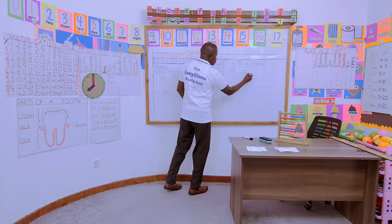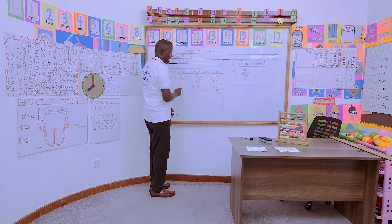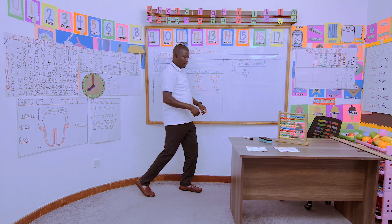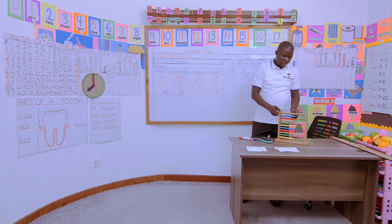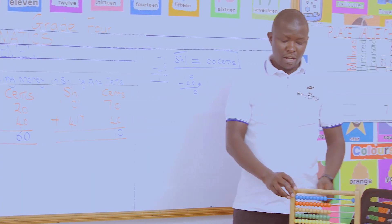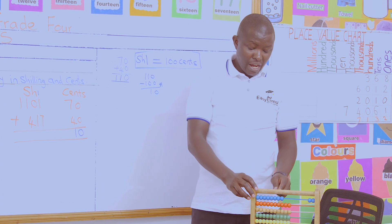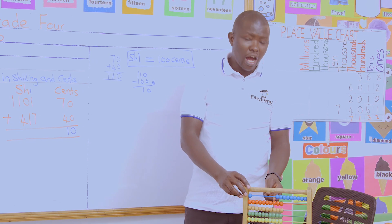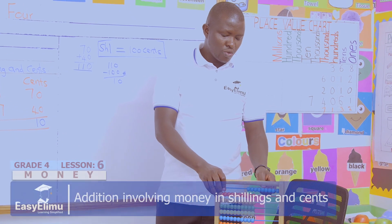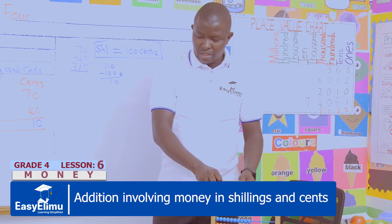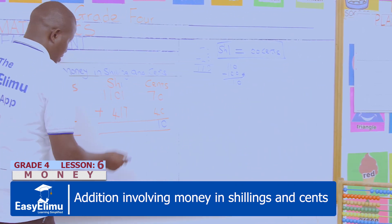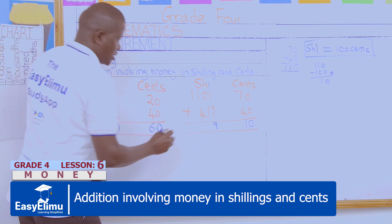Then we carry one — we regroup one to the shillings side, because now we have one shilling here. When we regroup, we come to: 1 plus 1 plus 1 plus 7. Using the abacus: one, two, three, four, five, six, seven, eight, nine — so we have nine here. Indicate 9 just below the 7.